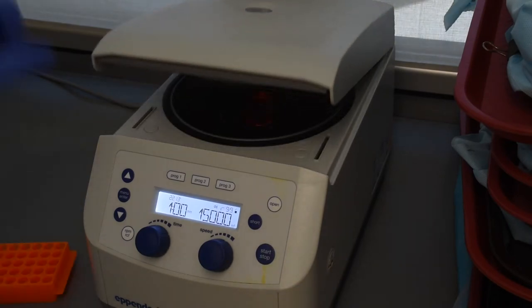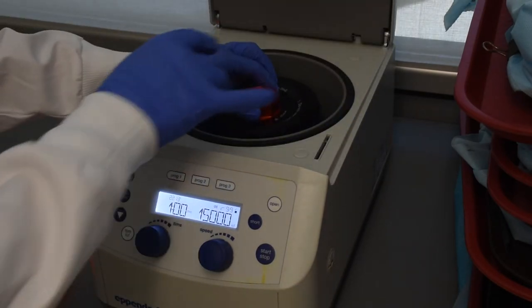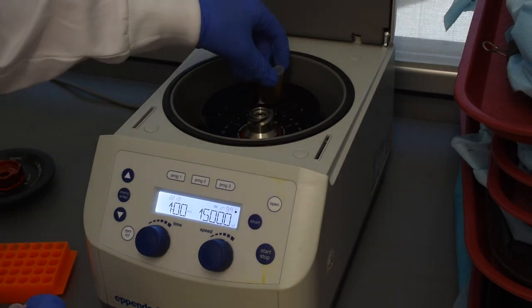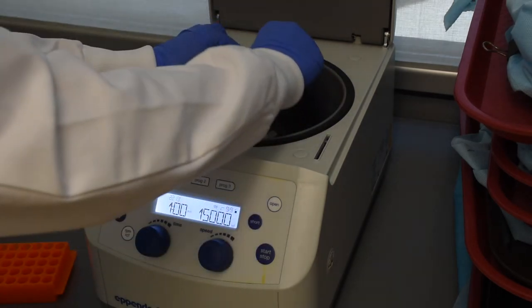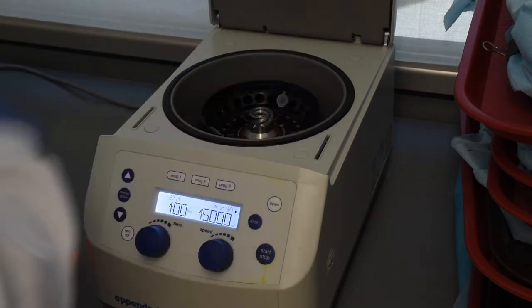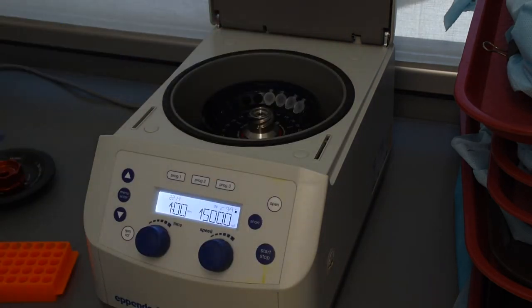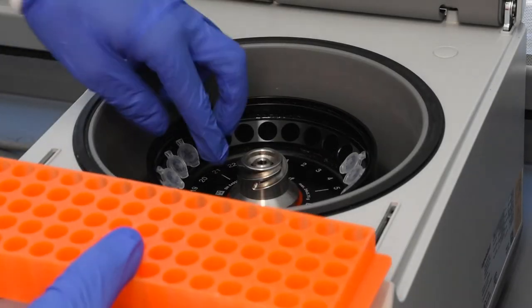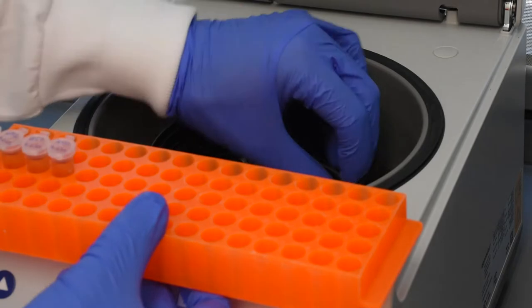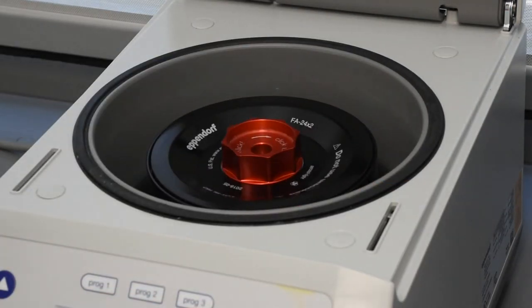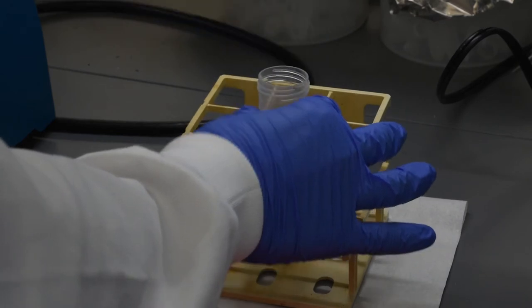Centrifuge your tubes at 15,000 times G for one minute. Pour off the supernatant, leaving a cell pellet.